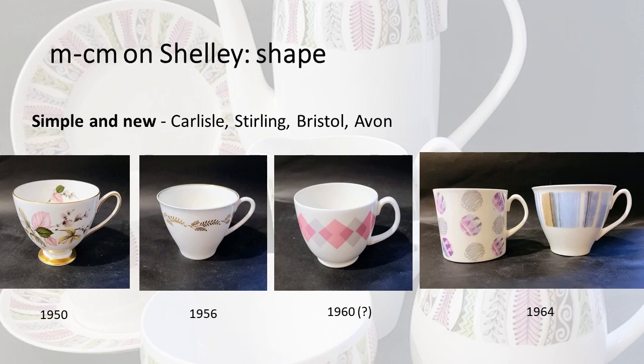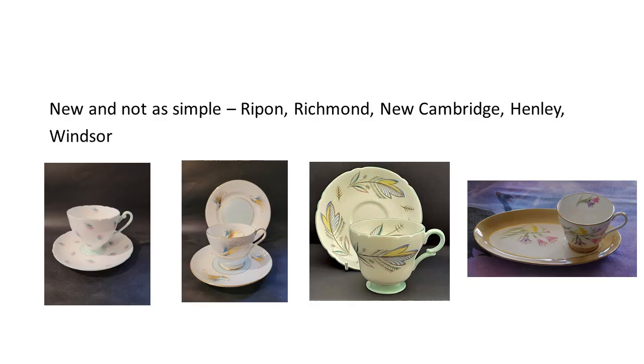Avon is the last new cup shape that Shelley produced, which came out in December 1964. It's to me the most mid-century modern in a way, right to the end of their production. The left is the Avon coffee and on the right is the Avon tea cup — and notice they're actually the same size, whereas previously coffee cups were often smaller than teacups. I think that just shows the way post-World War II people were drinking coffee differently than how it had been previously.